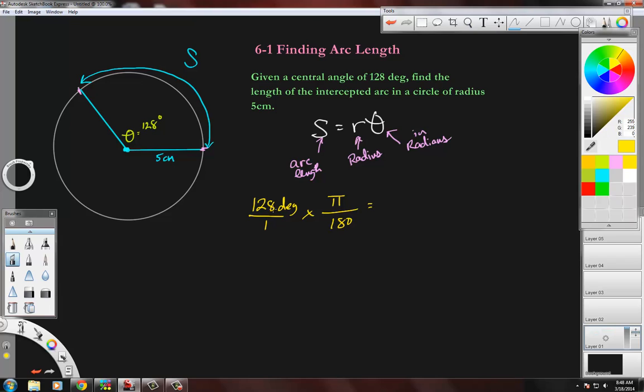This is going to reduce by the number four, so that is going to go in there - 32 times, and this will be 45 times. So this becomes 32 pi over 45. This is the degree measure 128 degrees in radians.